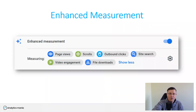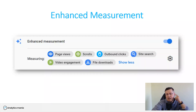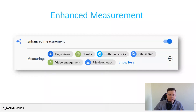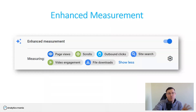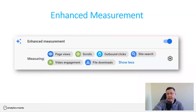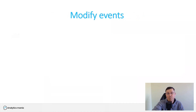It's worth mentioning enhanced measurement, even though I'm not a fan of everything here. Outbound clicks, file downloads, and site search are okay. But scroll tracking and video engagement I usually implement with Google Tag Manager, because video engagement doesn't work on all websites, and for scroll tracking I'd like to see more thresholds being tracked. That said, enhanced measurement for those who just want basic GA4 tracking is definitely better than having only page views in Universal Analytics.